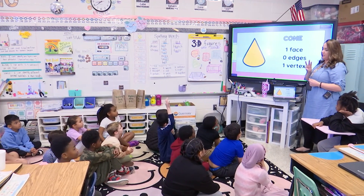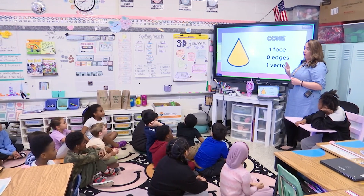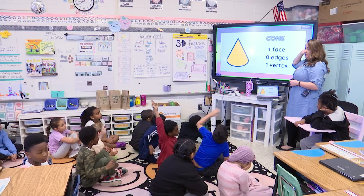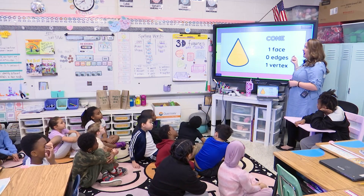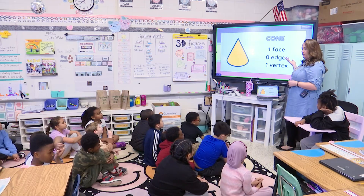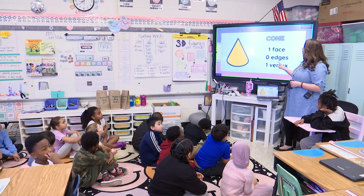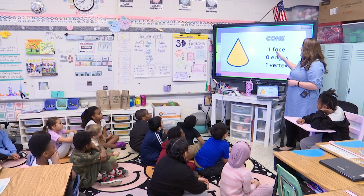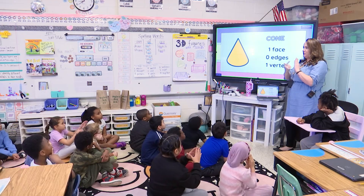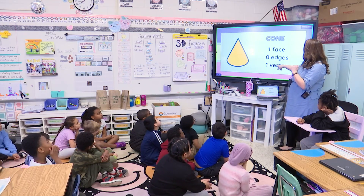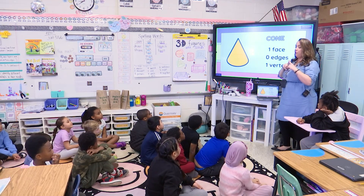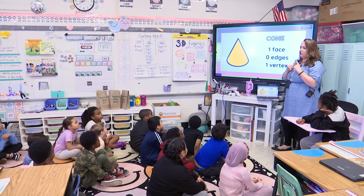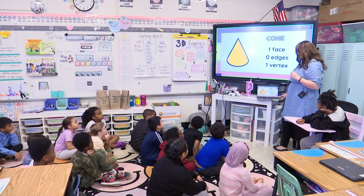Those are the three we need to know for our test in second grade, but we've gone further because a lot of you already knew our other solid figures. This one is a cone — a lot of you already knew it because it's like an ice cream cone. It has one face — the circle at the bottom — but zero edges because it's round. And it has one vertex at the top.